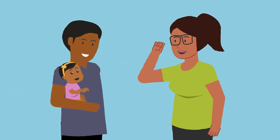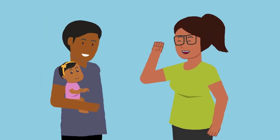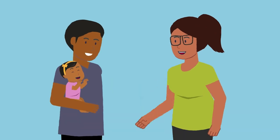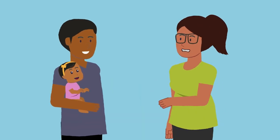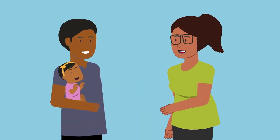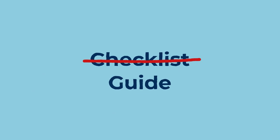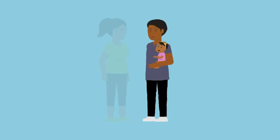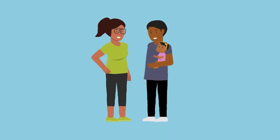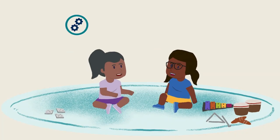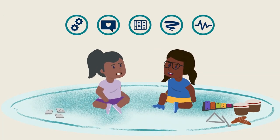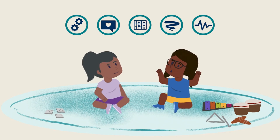A child's development is influenced by their community, culture and everyday experiences. The learning trajectories are not designed to be used as a checklist, as each child's development is unique. Rather, they serve as a guide to identifying and extending on children's abilities, knowledge and understandings. Learn more about the early childhood learning trajectories and how you can use them to strengthen your practice with children and families.